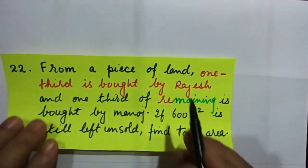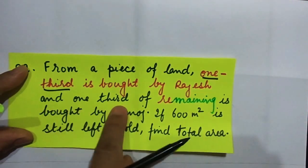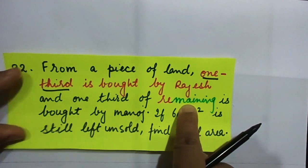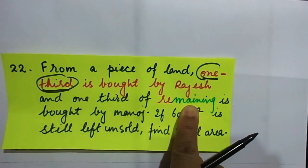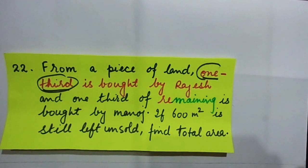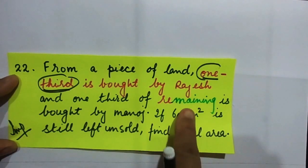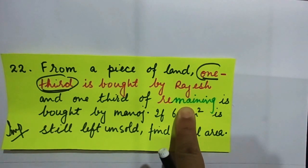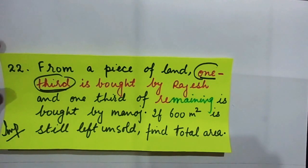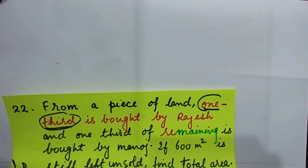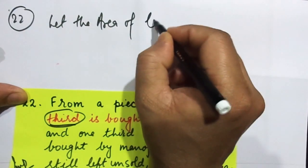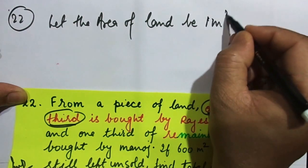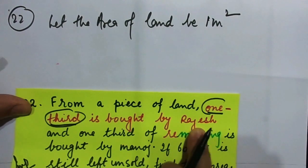Now question 22: from a piece of land, one third is bought by Rajesh, and one third of the remaining is bought by Manoj. Wherever you see the word 'remaining,' think carefully — one important question will be based on it in the examination. Let the piece of land be 1 meter square.